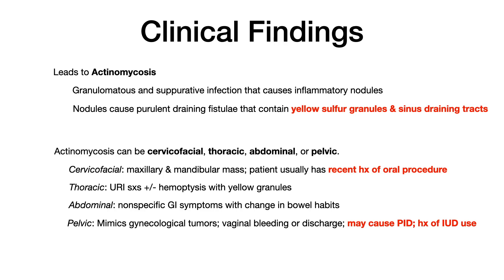You can also get thoracic, abdominal, and pelvic manifestations. Thoracic and abdominal tend to be lower yield on exams. In thoracic manifestations, you see vague upper respiratory infection symptoms and hemoptysis, which can contain those characteristic yellow granules. Abdominal manifestations cause nonspecific GI symptoms, with a change in bowel habits being the big giveaway. These two are definitely not worth memorizing if you're pinched for time.